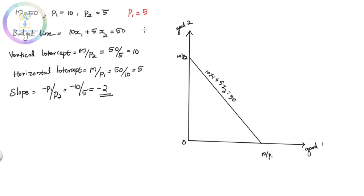Where is P1? P1 is 10. What is the budget line? Now P1 is 5. So 5 times x1 gives us 5.